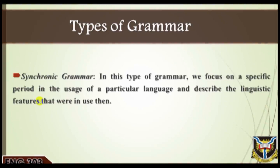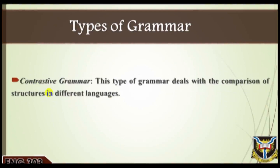An example is the definite article 'the.' In Old English it had the form 'þe,' in Middle English the form was 'þe/seal,' and in Modern English the form is 'the.' Two: synchronic grammar. In this type of grammar we focus on a specific period in the usage of a particular language and describe the linguistic features that were in use then. For instance, we might discuss the syntax of Shakespearean English, the reduction of inflections, the Great Vowel Shift, or front umlaut of Middle English. What matters is that we are describing the features of a language at a particular period — this is synchronic grammar.